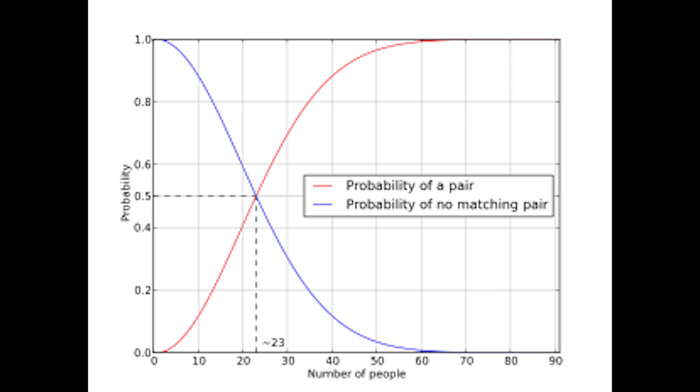If that person fails to match, he leaves the room, and another person will have 20 out of 365 chance and so on.